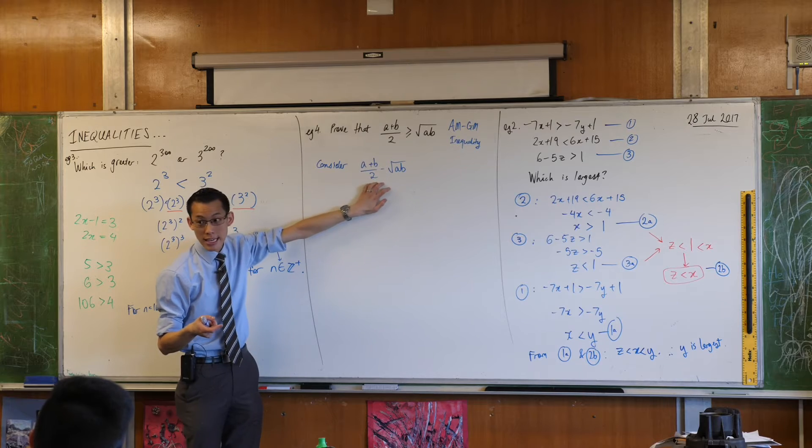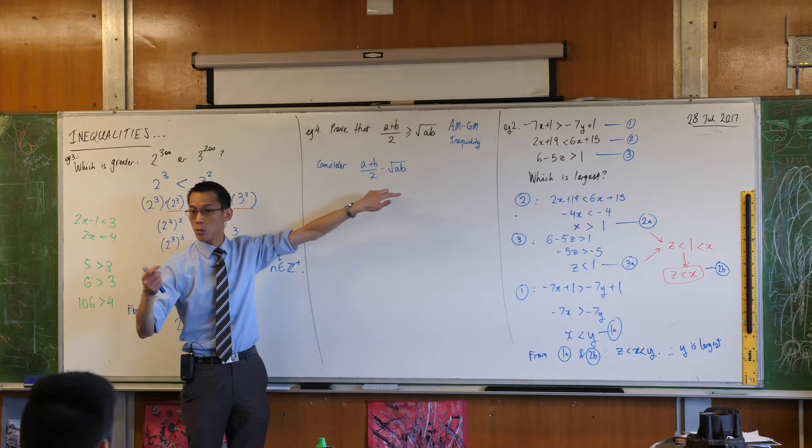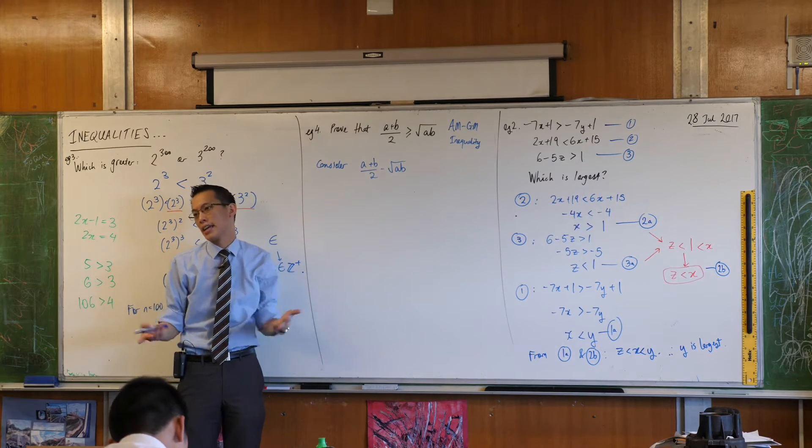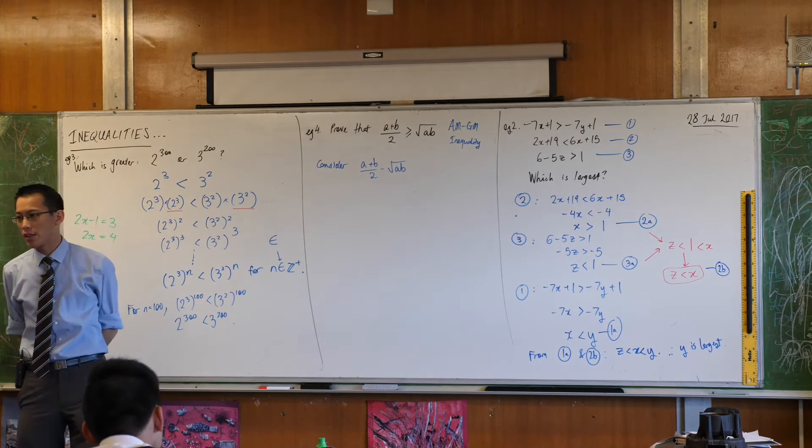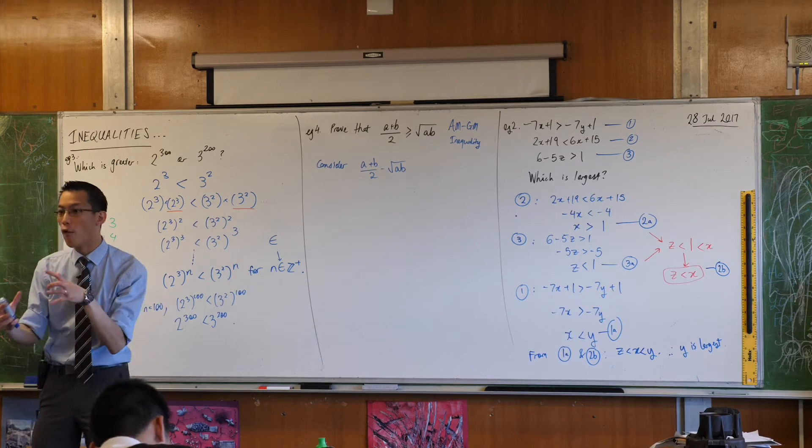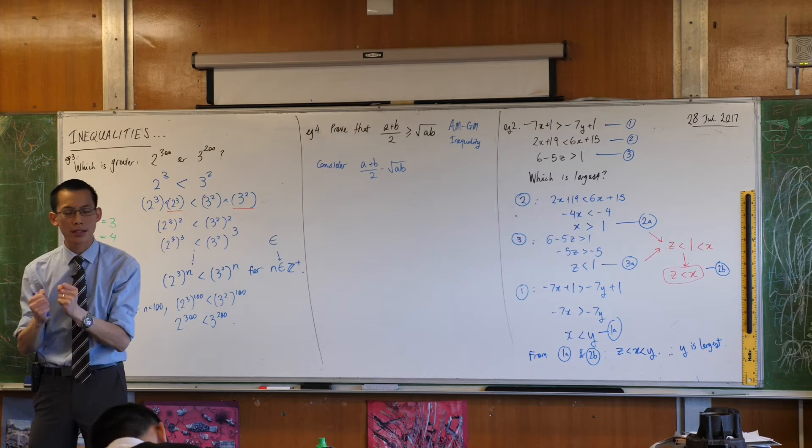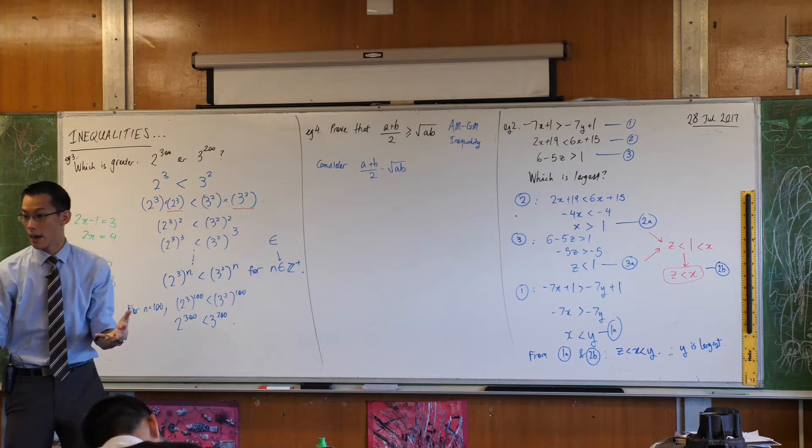So I want this thing to be greater than or equal to zero. So I don't want it to be negative is what I'm saying. So if I can muck around with this and twist it into a form to demonstrate this thing has to be greater than or equal to zero, then I'm home.